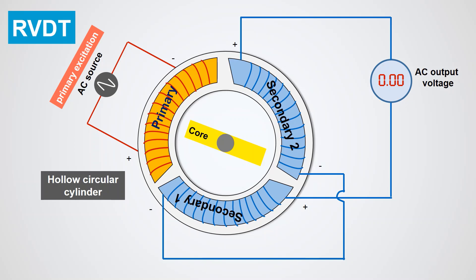But as soon as the core rotates by even the smallest amount, a differential voltage is induced at the secondary output.